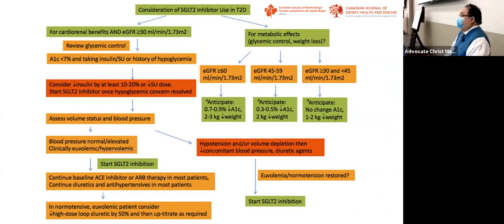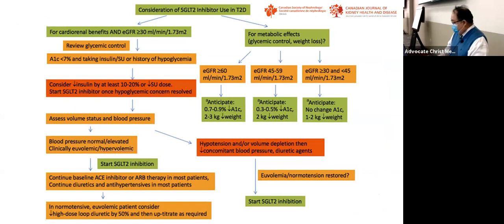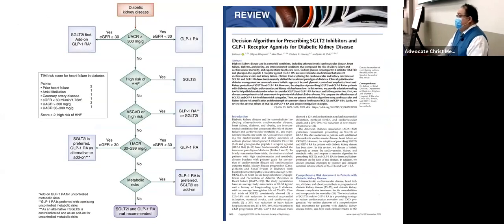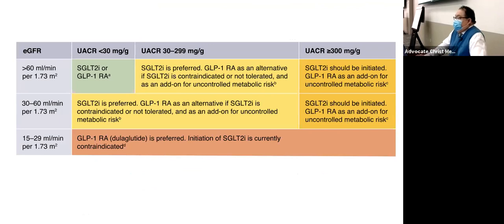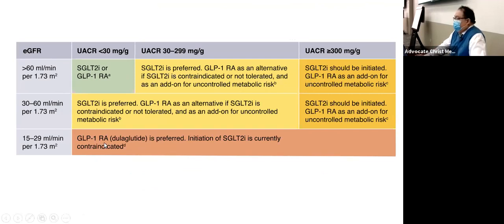The Canadian Society of Nephrology guidelines on SGLT2 inhibitors and a recently published algorithm in the Clinical Journal of the American Society of Nephrology guide which patients to start and whether to use SGLT2 inhibitors or GLP-1 receptor agonists. For patients with GFR greater than 60, SGLT2 inhibitors are preferred. With albuminuria or microalbuminuria, SGLT2 inhibitors are preferred. For patients with stage 4 and lower GFR, GLP-1 receptor agonists are recommended, as initiation of SGLT2 inhibitors is currently contraindicated.